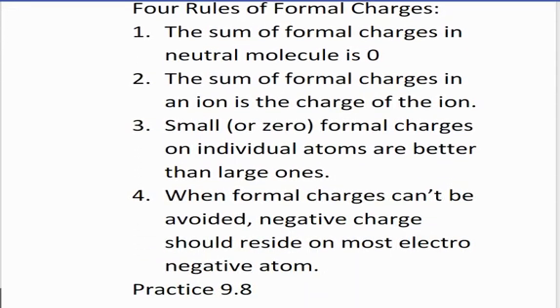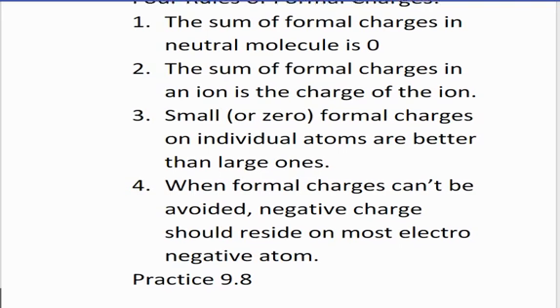Nitrogen is five minus, there are two that are not bonded to the carbon. So two plus half of the bonding electrons in between the C and the N, which means three of them. And I get zero also on this structure. So this is a stable structure where all of the formal charges are zero. Here are the rules for formal charge. The sum of the formal charges in a neutral molecule is zero. The sum of formal charges in an ion is the charge of the ion. Small or zero formal charges on individual atoms are better, meaning more stable, than large ones. When formal charges can't be avoided,